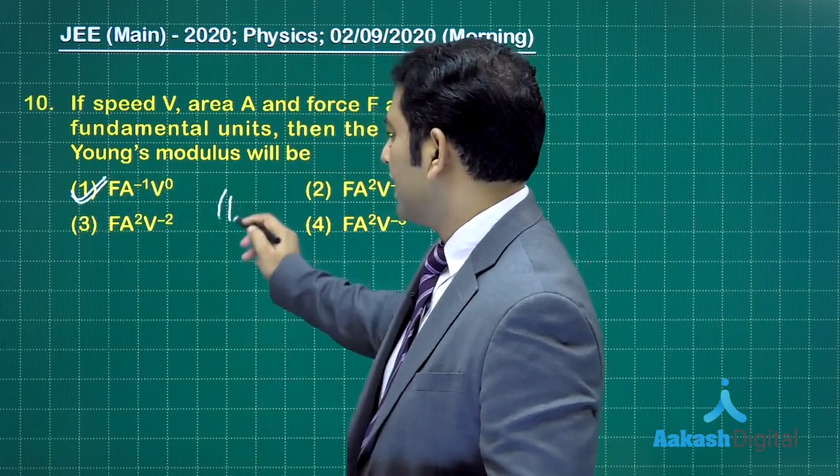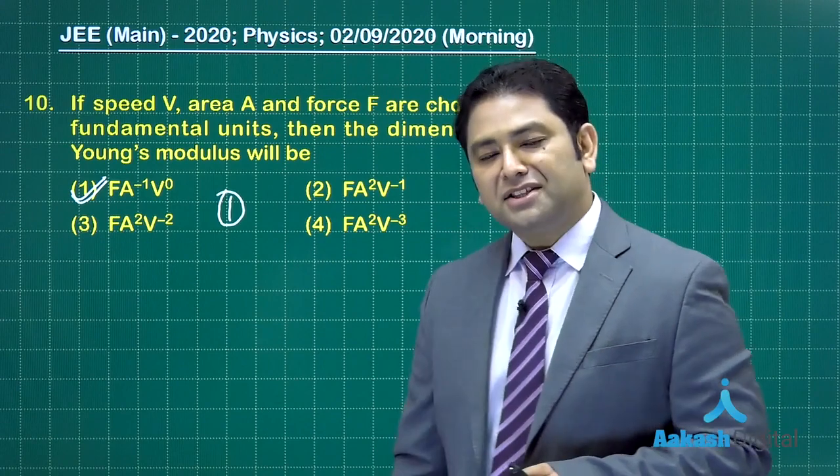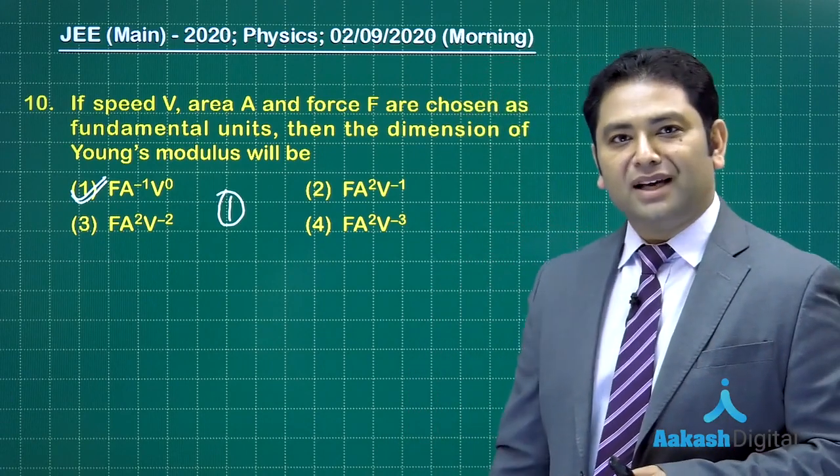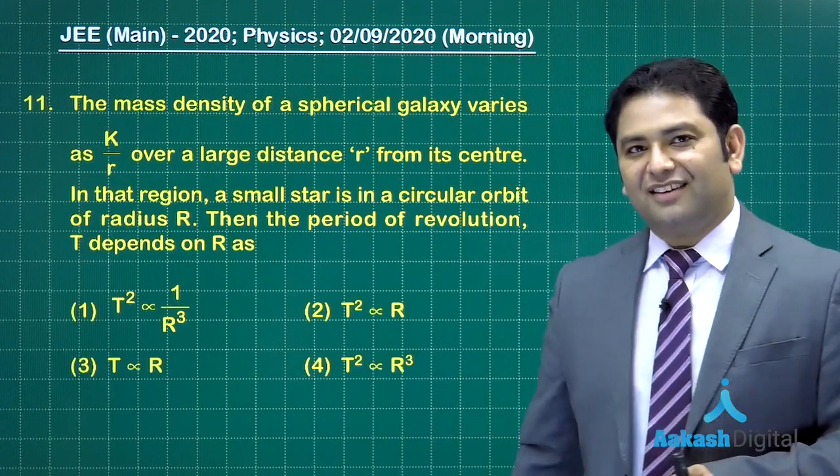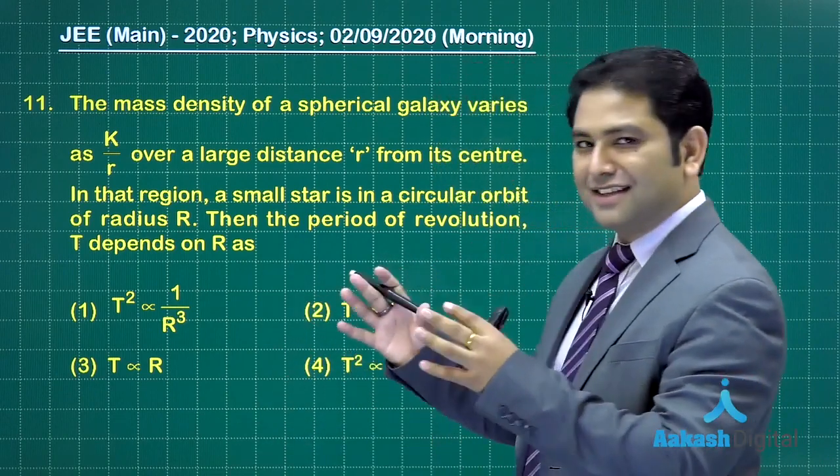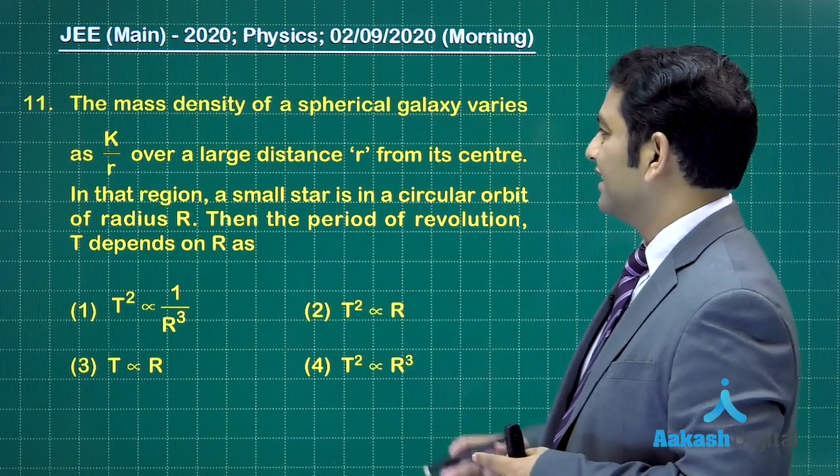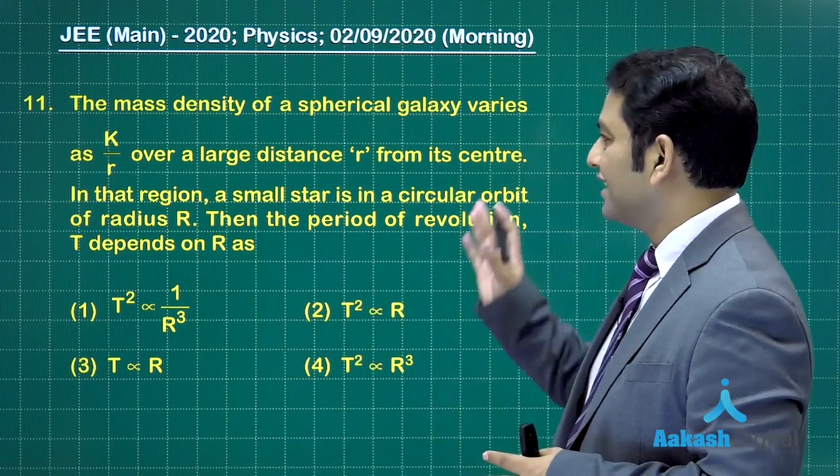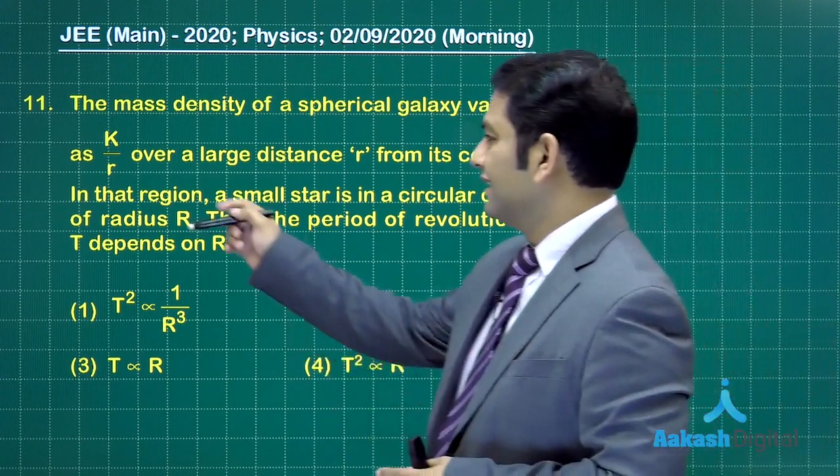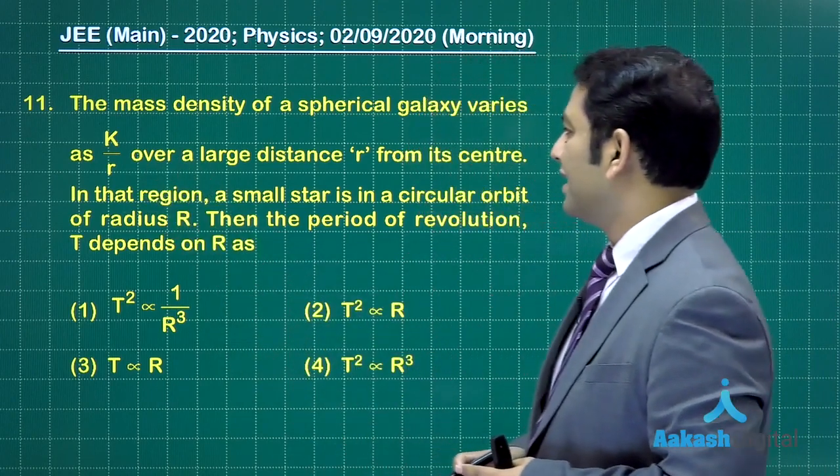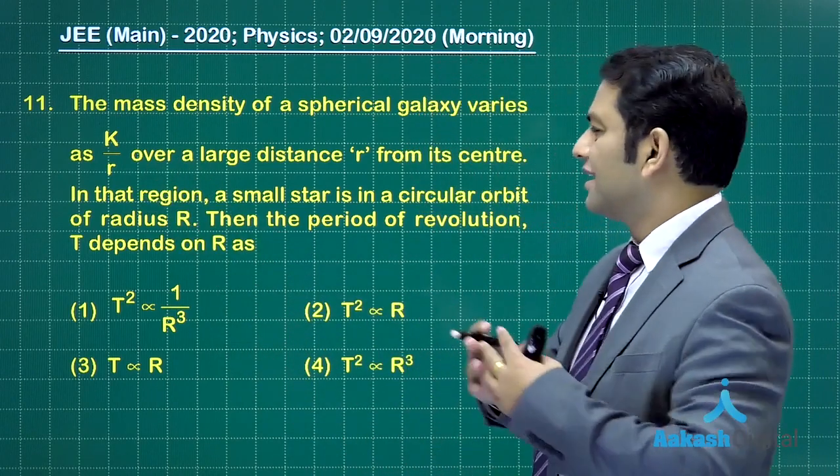Now let's go to question number 11, from gravitation, but there is a little bit of modification involved. There is a mass density of a spherical galaxy and the density varies as k by r, and the distance r is quite large.